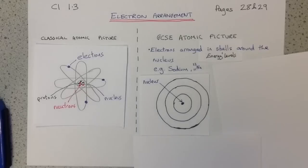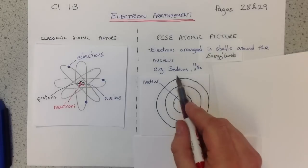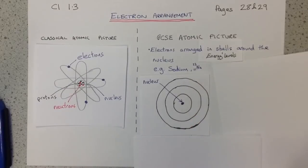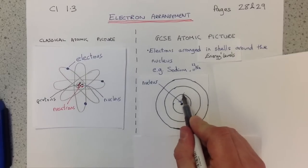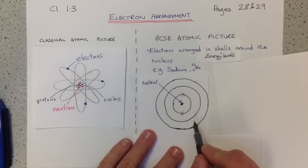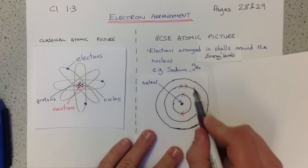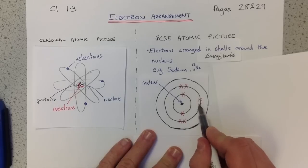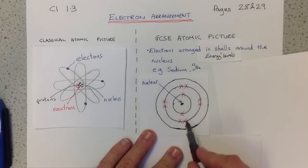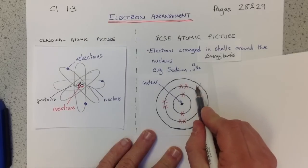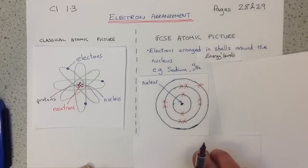Electrons fill up from the lowest available energy level outwards. So, for sodium — our example — sodium is element number 11, atomic number 11, therefore 11 protons, and as atoms are neutral, 11 electrons. Into our first shell go 2 electrons; the first shell can take 2 electrons only. Our second shell can take 8 electrons. 2 plus 8 is 10, and we know there are 11, so our one final electron goes in the highest shell on the outside.